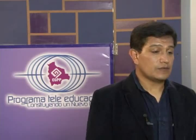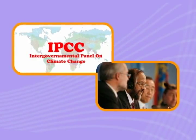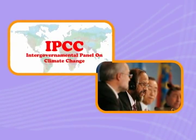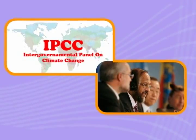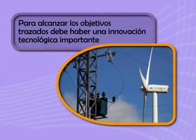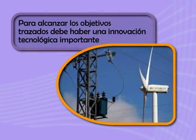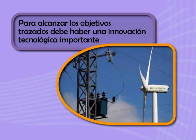Dentro de la convención hay varios grupos o paneles; uno de estos es el Panel Intergubernamental de Cambio Climático, el IPCC. Este grupo ha emitido un informe especial en el cual mencionan que para alcanzar el objetivo último, como se formula en el artículo 2, se requiere una innovación tecnológica y una amplia y rápida transferencia y aplicación de tecnologías, incluyendo el know-how.